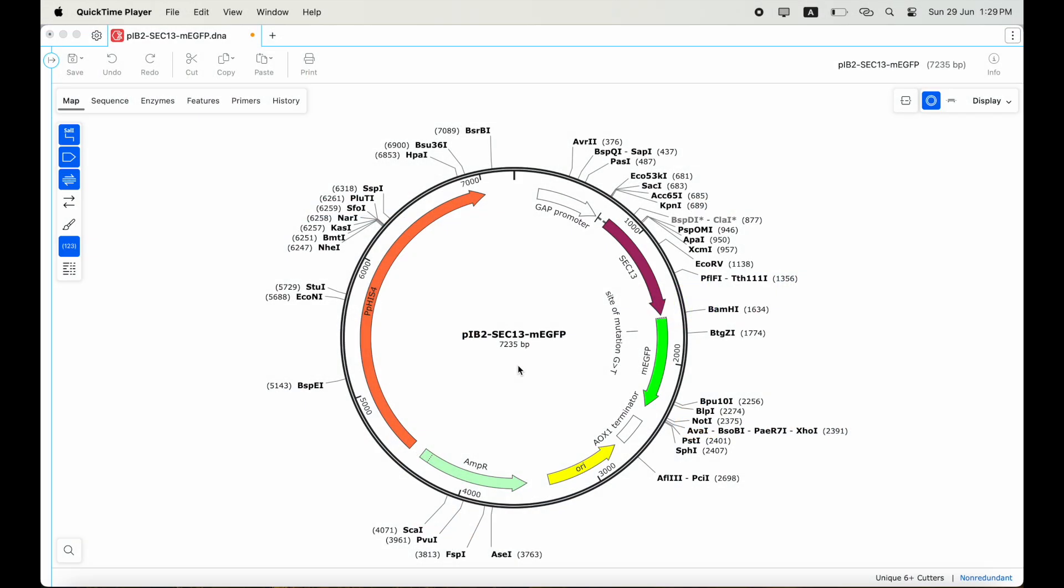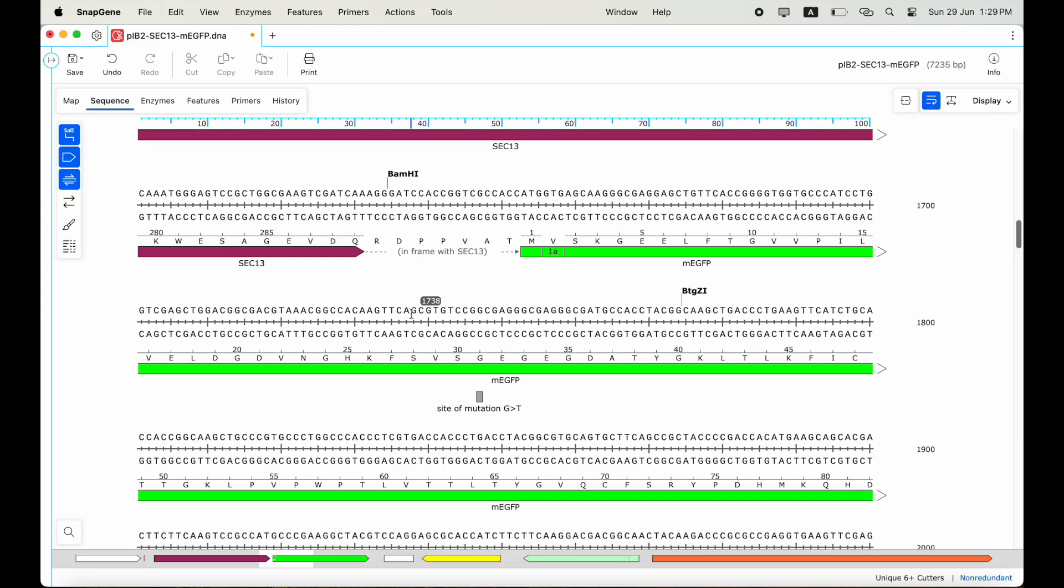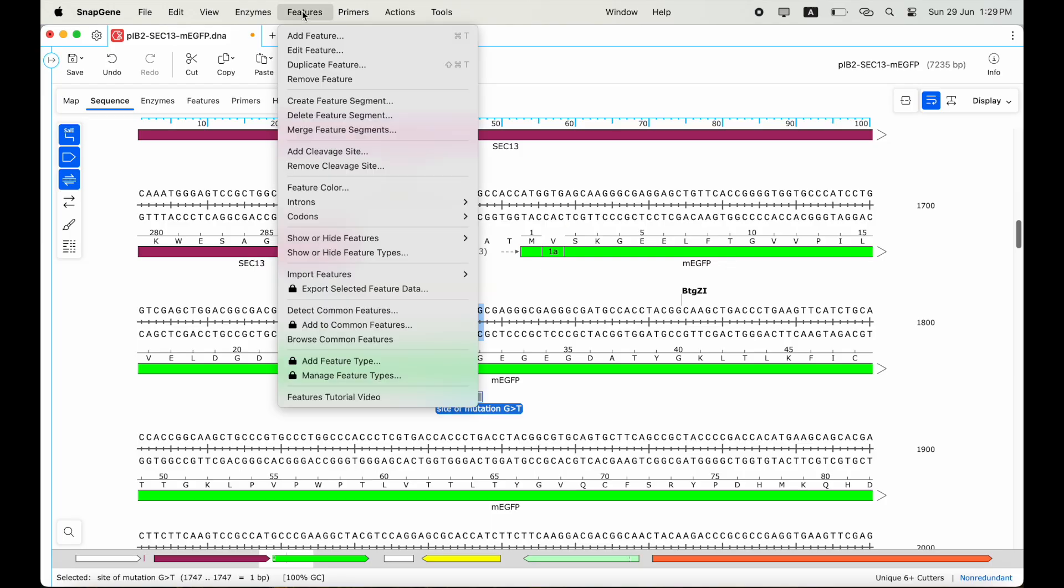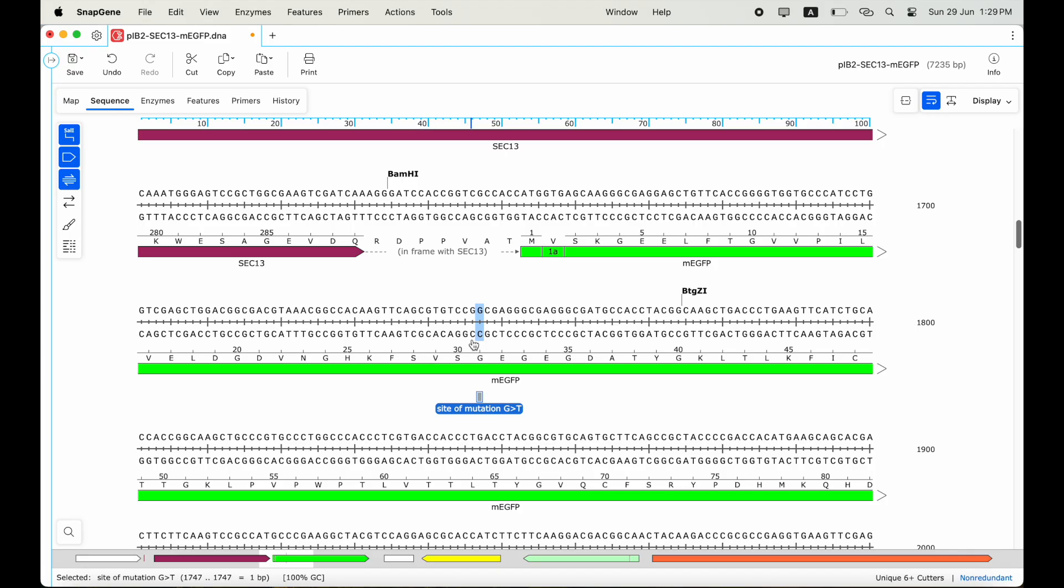Designing primers can be easily done using SnapGene. Let me show you with an example. I'm going to use a commercial GFP plasmid for this example. The first thing I will do is identify the position of my intended mutation, which I have already done and highlighted. What I did was selected the base and added a feature so that I can keep track of it.